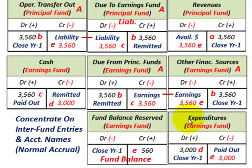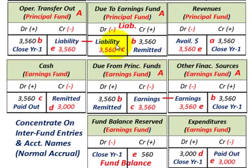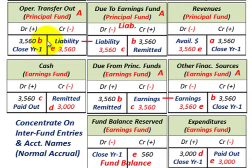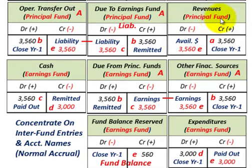At year end, we need to do some closeouts. In the principal fund, the items to close out are the operating transfers out — we had a debit of $3,560, so now credit it for $3,560, bringing it to zero balance. Also close out the revenues account — we had a credit of $3,560, so debit revenues for $3,560 to reduce the balance to zero.